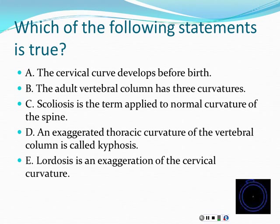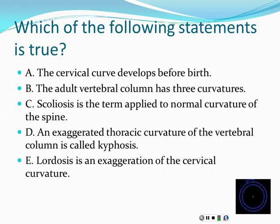The cervical curve develops after birth, not before. The thoracic and sacral curves are the primary curves you're born with; the cervical curve develops as baby learns to hold their head up and the lumbar curve develops as baby learns to walk upright. So the adult vertebral column has four curves: cervical, thoracic, lumbar, and sacral. Scoliosis is not a normal curvature - it's a lateral curvature off to one side. Kyphosis is an exaggerated thoracic curve. Lordosis is an exaggerated lumbar curvature, not cervical.